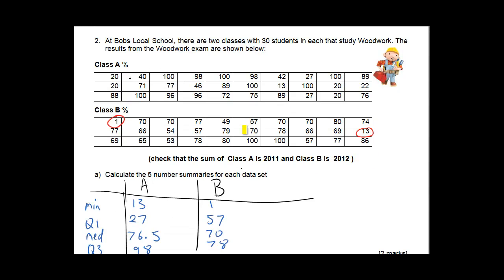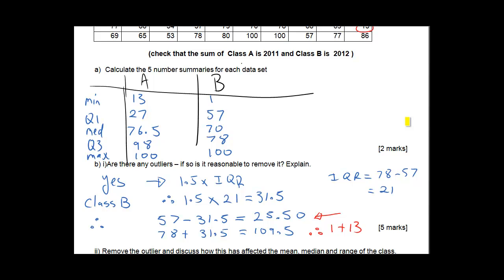This next one here is entering data into the calculator. Class A will be list one on your calculator. Class B will be list two on your calculator. Put them in there and then you'll get your five number summaries. Five number summaries is your minimum, your quartile one, your median, quartile three and your maximum, which then you use for your box plot. And you get these numbers here.